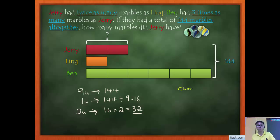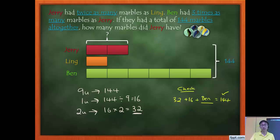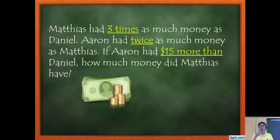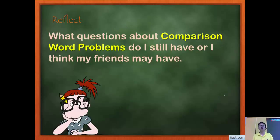Let's check. Jerry has 32, Ling has 16. Find how many Ben has — Ben is 6 units — and if they all add up to 144, you are correct. Now it's your turn: copy the missing information highlighted in yellow from question 2 on your video worksheet and solve it. Come back to class and discuss with your teachers. What other questions do you have about comparison word problems? Questions will drive learning — see you next time!